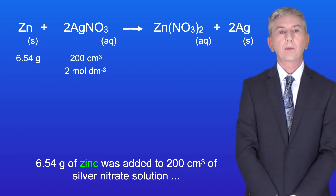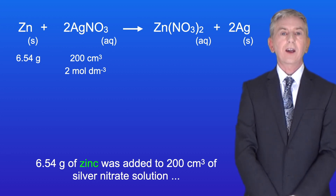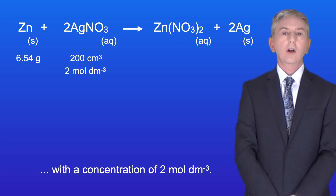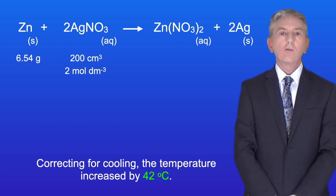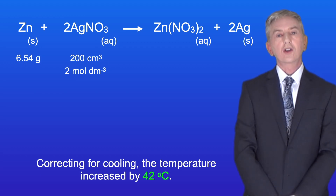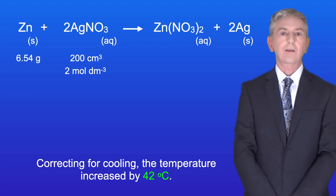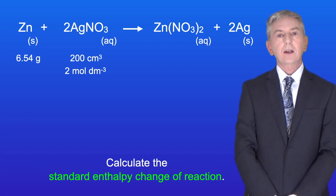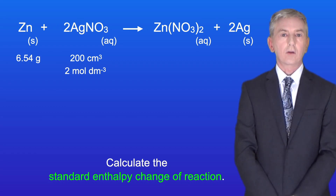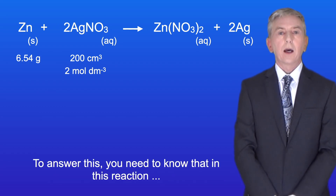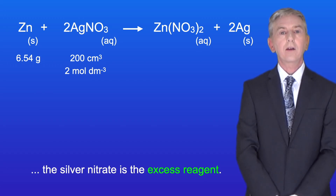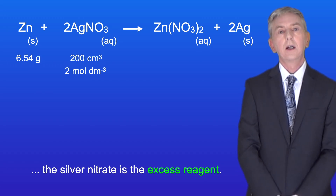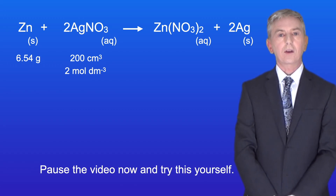6.54 grams of zinc was added to 200 centimeters cubed of silver nitrate solution with a concentration of 2 mole per decimeter cubed. Correcting for cooling, the temperature increased by 42 degrees Celsius. Calculate the standard enthalpy change of reaction. To answer this, you need to know that in this reaction the silver nitrate is the excess reagent. So pause the video now and try this yourself.